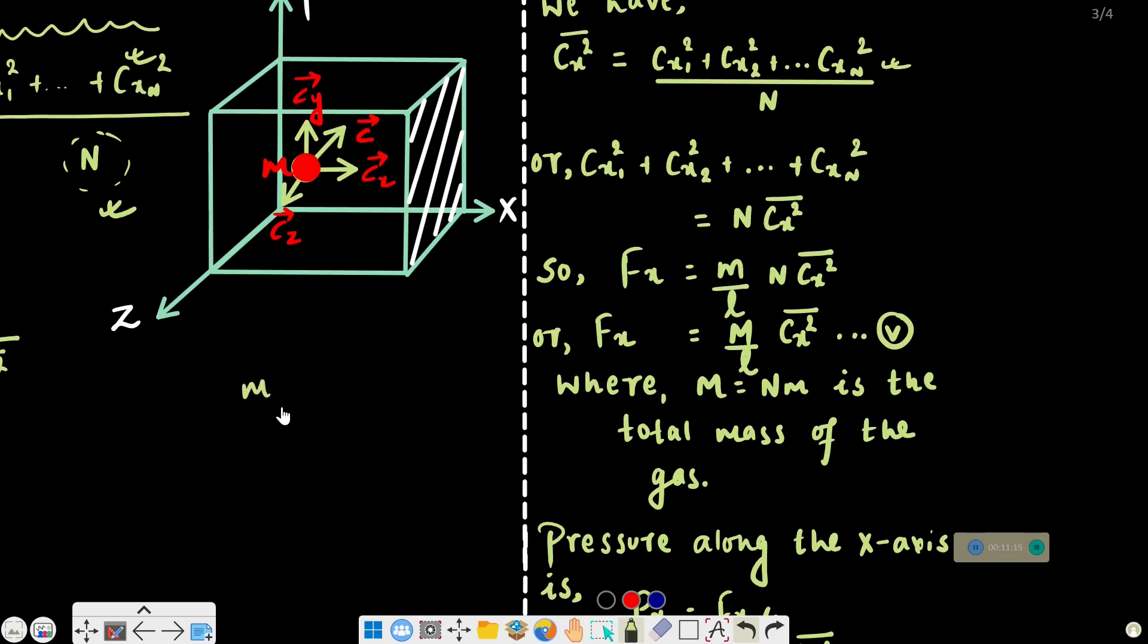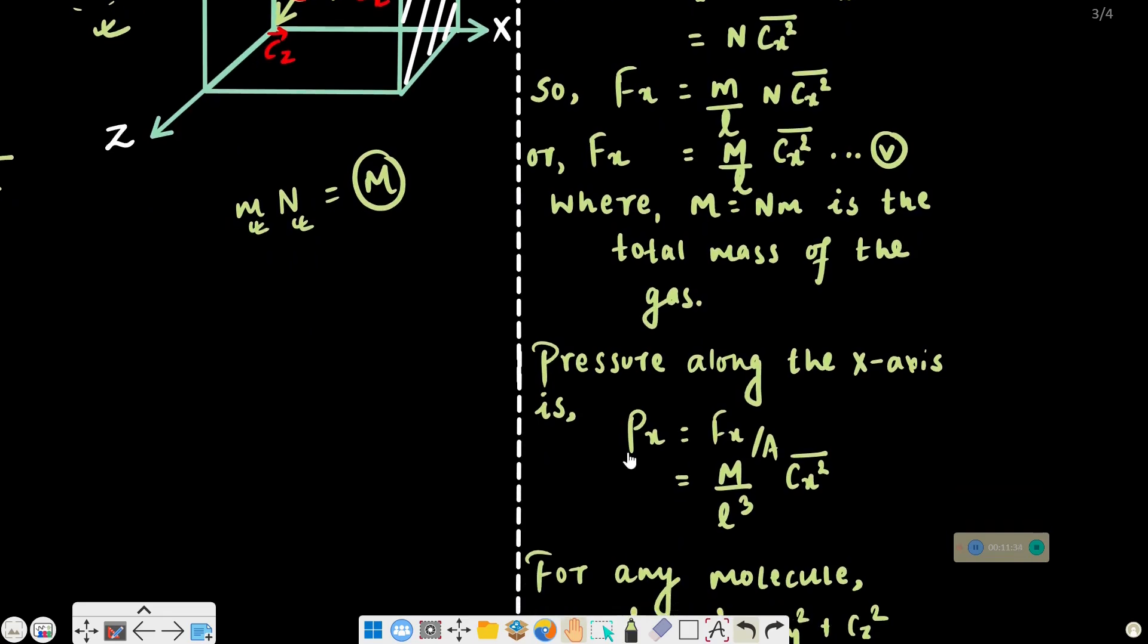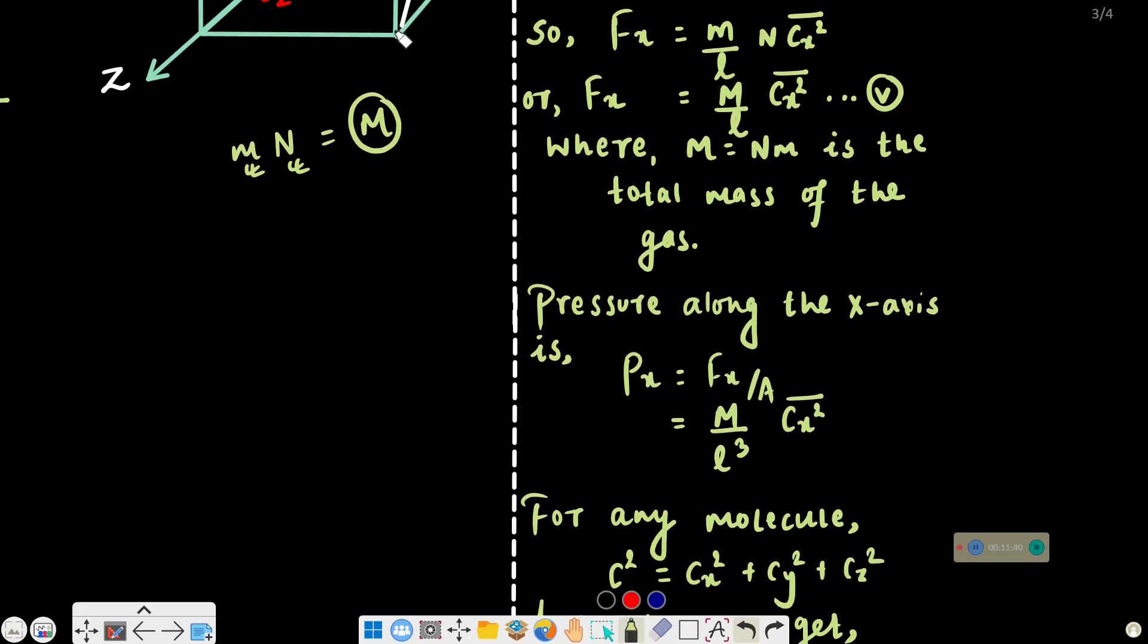The mass of each molecule is M, and the total number of molecules is N. So the total mass of the gas is NM. Dividing by volume gives density rho. Pressure is force divided by area. The area of the wall is L², so pressure Px equals M/L³ times Ncx² mean, which is M/V times cx² mean.